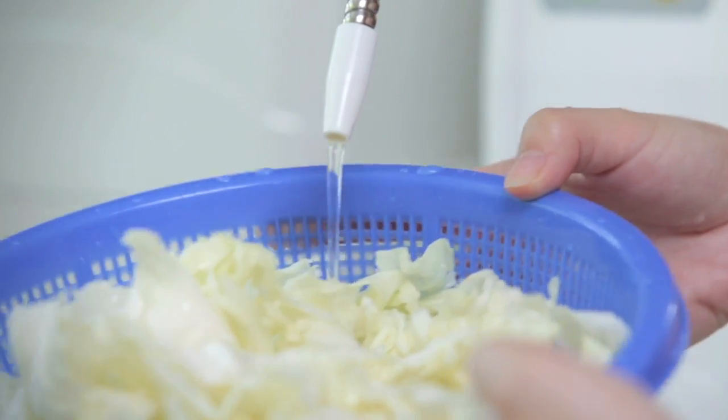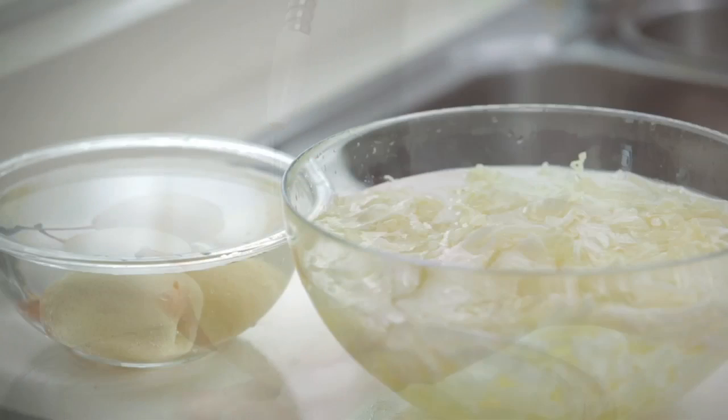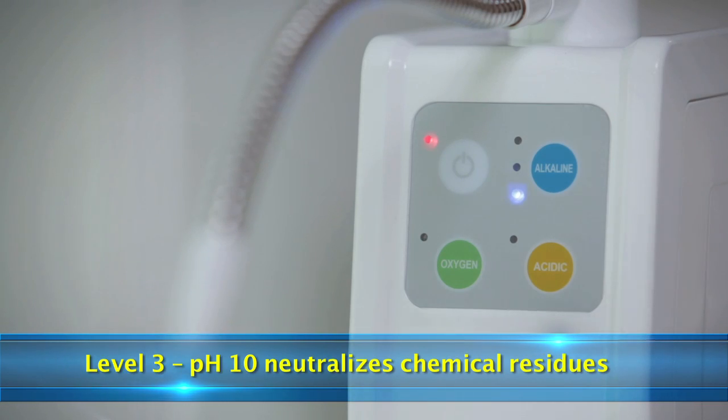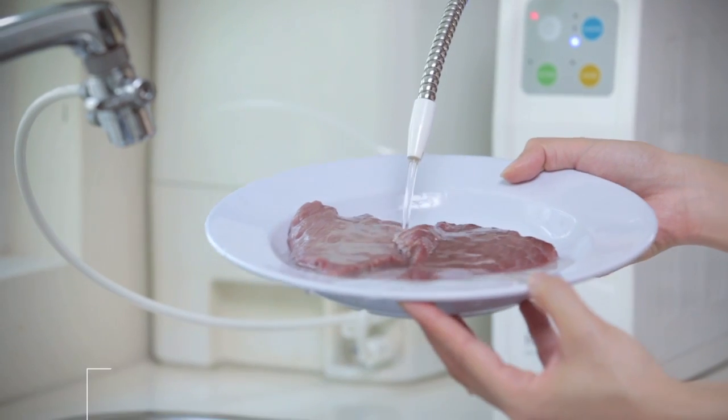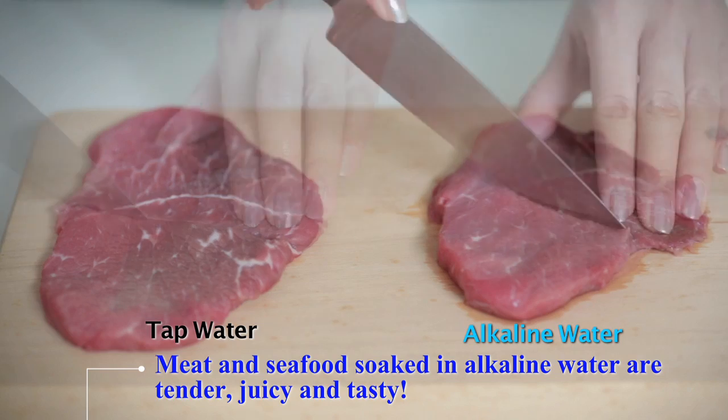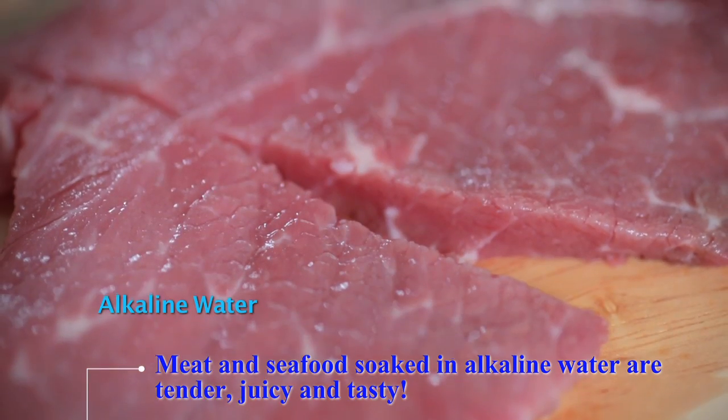After washing with acidic water to kill the germs, soak your food with strong alkaline water from level 3 to neutralise chemical residues. Meat and seafood soaked in alkaline water with ionic minerals will be tender, juicy, and tasty.